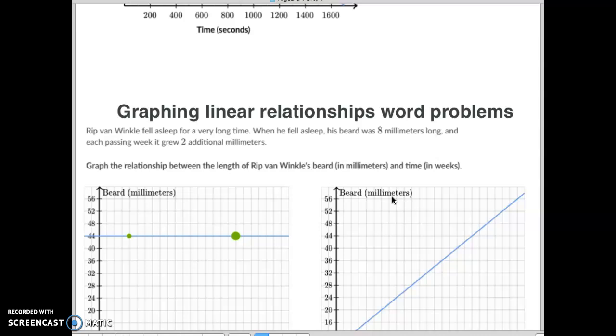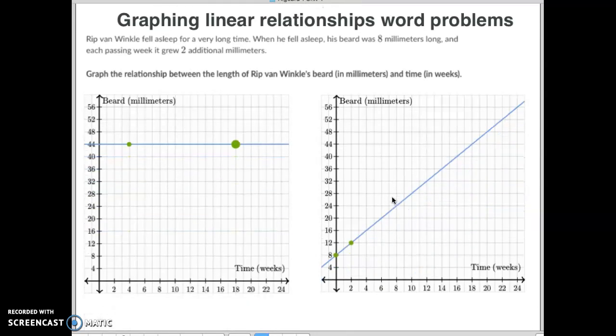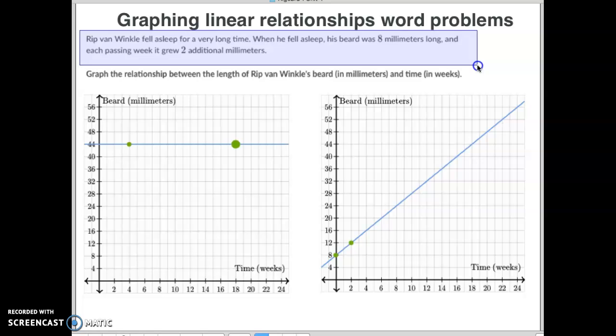Let's move on to the next concept. The next one is called graphing linear relationship word problems. Rip Van Winkle fell asleep for a very long time. When he fell asleep, his beard was 8 millimeters long. So you're going to take what they gave you for a graph, and you're going to take the first dot and put that at 8 millimeters right here.